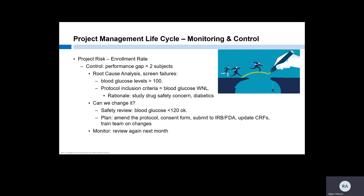But it is worth asking: can this criteria be revised without impacting patient safety or study integrity? Let's have the experts review. The Data Safety Monitoring Board looks at it and says that we could safely increase the inclusion criteria to up to 120. The team makes a plan to amend the protocol and study documents, submit to FDA and IRB, and train everyone on the changes. Next month, we'll repeat the process and see if this change has had a positive impact on enrollment.